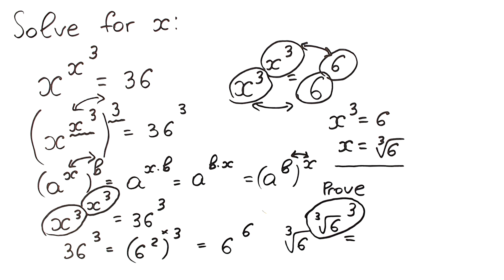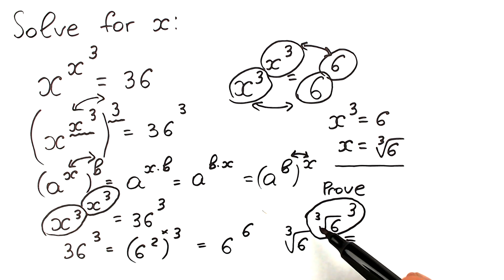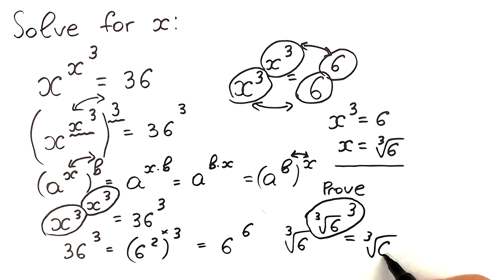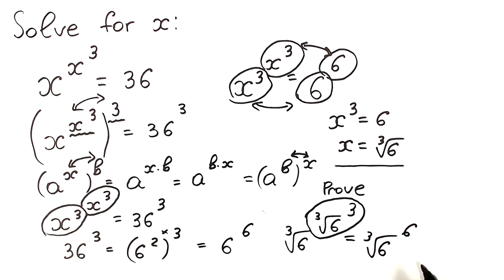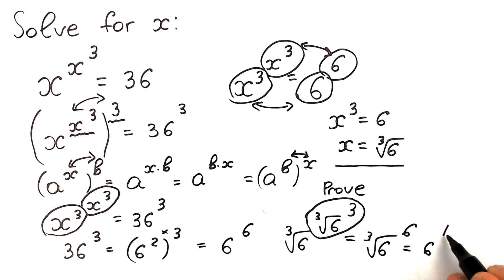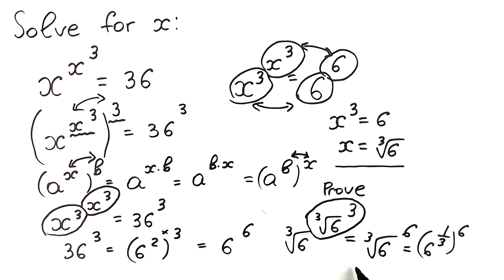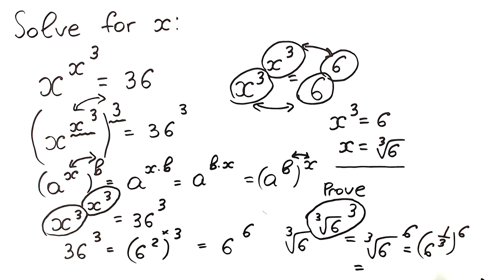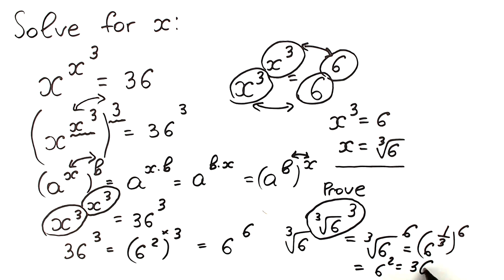So just like the square root of 6 squared equals 6, the cube root of 6 to the power 3 equals 6. We then have the cube root of 6 raised to the power 6, which we write as 6 to the power 1/3, raised to the power 6. That gives 6 to the power 1/3 times 6, which equals 6 to the power 2, and 6 squared equals 36. The solution checks out correctly.